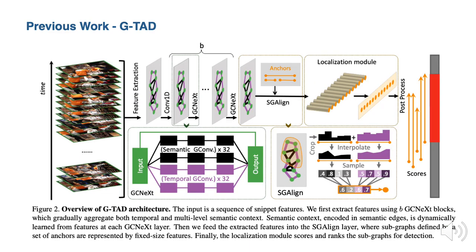With graph convolution as the basic operation, we design a GCN block called GCNEXT. GCNEXT learns the feature of each node by aggregating its context and dynamically updates the edge in the graph. To localize each subgraph, we also design an SG-alignment layer to embed each subgraph into the Euclidean space.